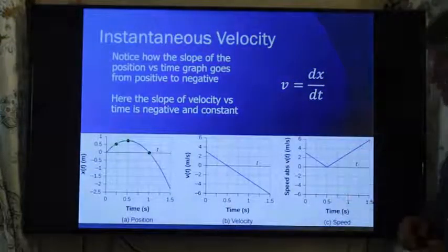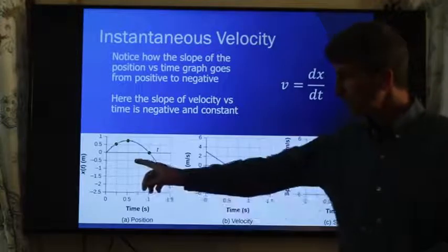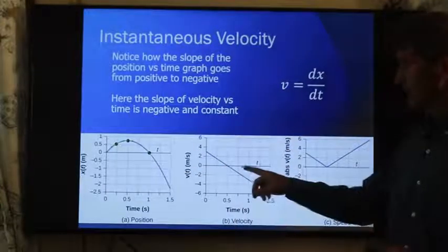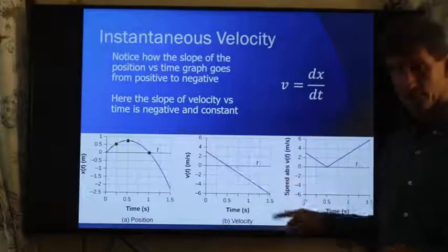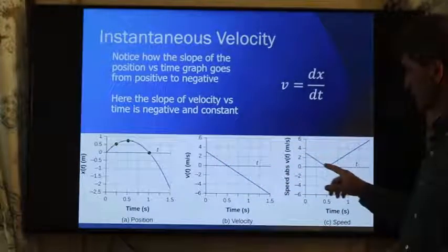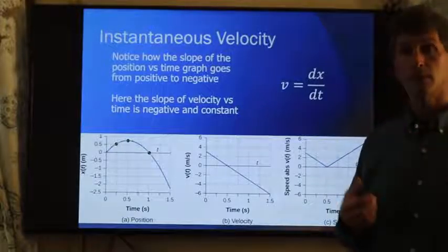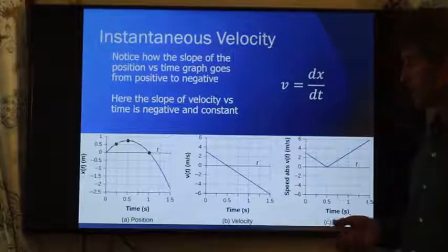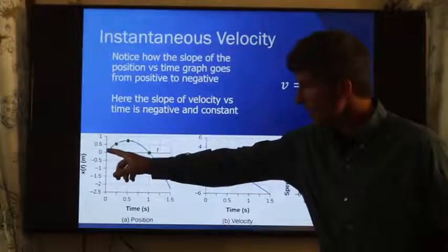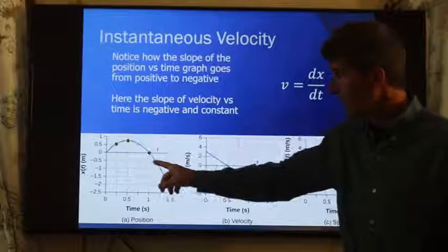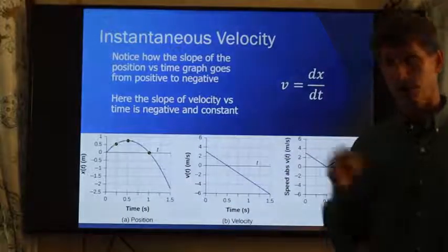Now again, looking at instantaneous velocity, here we have a slope that changes quite a bit. Here we have a slope which is constant over the entire form. Here we have a slope that's constant here, but then changes. In describing the different motions here, I would say that the velocity starts out positive, then it becomes less and less, it stops. Then it goes backward, and goes faster and faster in the negative direction.